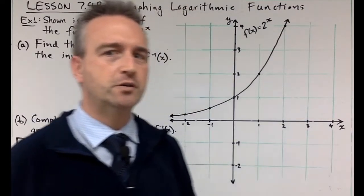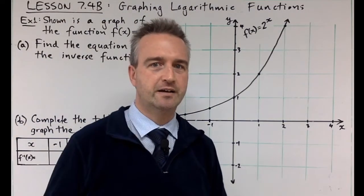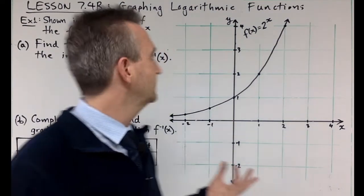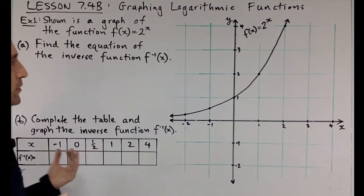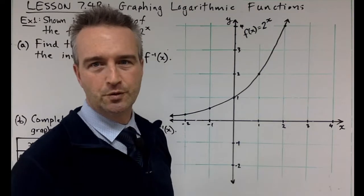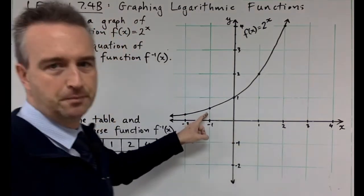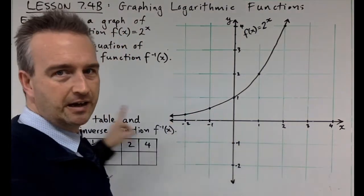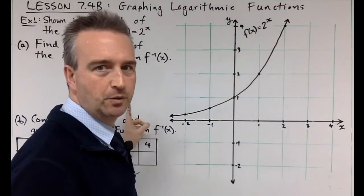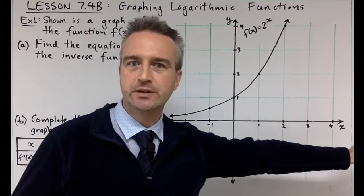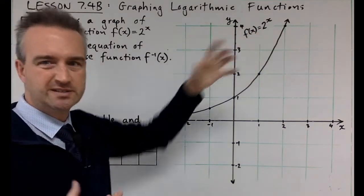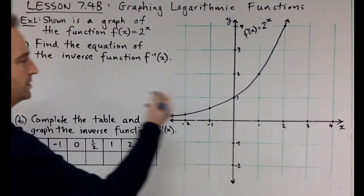We're going to talk about graphing logarithmic functions. To do that, we need to define what a logarithmic function is and why we need it. Starting off, we've got our graph of 2 to the x, which goes through (0,1), (1,2), (2,4). Going back, 2 to the minus 1 is one half, so as we go along we're multiplying by 2 and coming back we're dividing by 2. The question is: what's the inverse function of this? This is actually where logarithms come from.